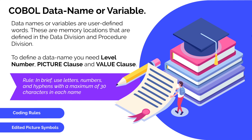An important point to remember when defining variable names is that you can use letters, numbers, and hyphens. At maximum, you can have only 30 characters in each name, and you should never start your variable name with a digit.